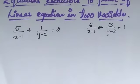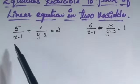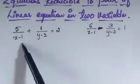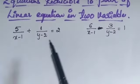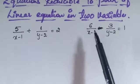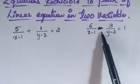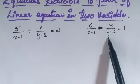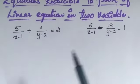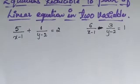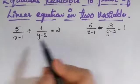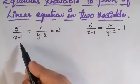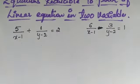So one example I have taken: 5 divided by (x minus 1) plus 1 divided by (y minus 2) equals 2 — this is equation one. Another one is 6 divided by (x minus 1) minus 3 divided by (y minus 2) equals 1 — this is equation two. You have to compare both equations, and you can see they contain some common terms.